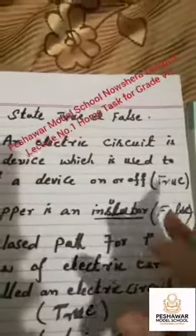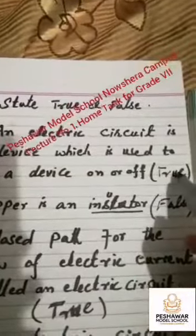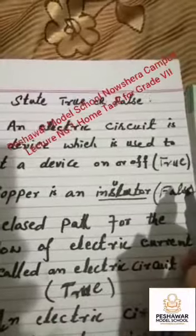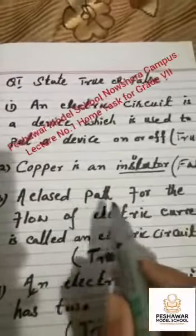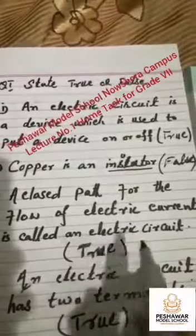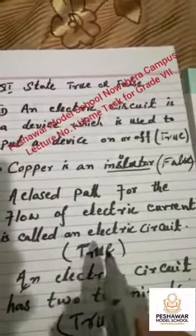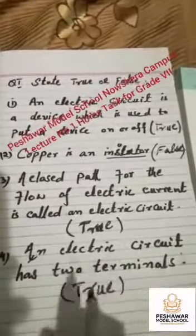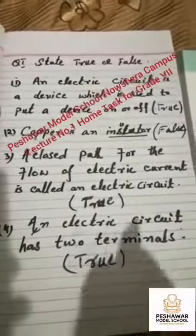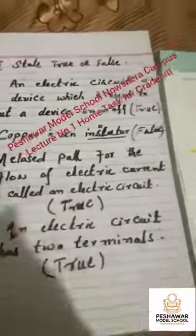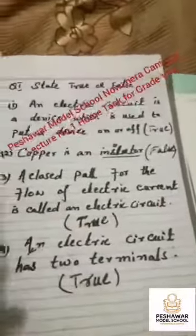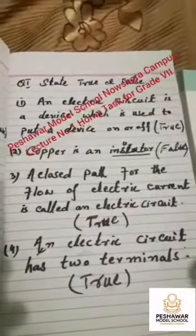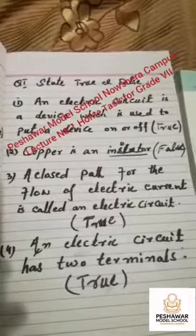To recap: Number 1, an electric circuit is a device used to put a device on or off — true. Number 2, copper is an insulator — false. Number 3, a closed path for the flow of electric current is called an electric circuit — true. Number 4, an electric circuit has two terminals — true. So learn it, and after two days you will receive question number 2.